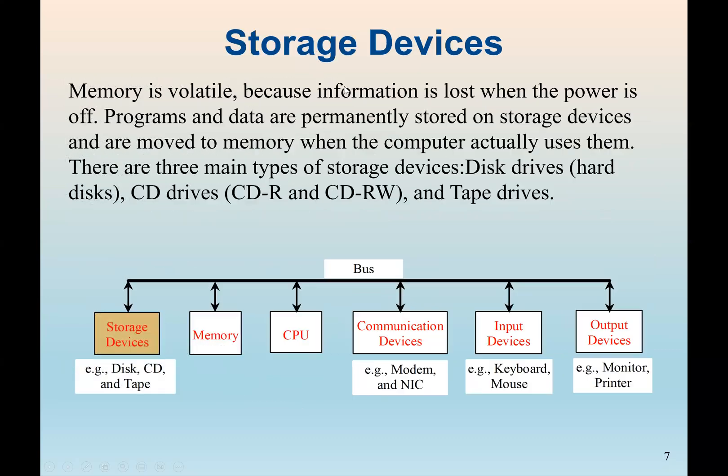So also we have the storage device, which is the hard drive. CD drive is another example, floppy disk, tape drives. A storage device normally will store data permanently. We know memory is volatile, which means when the computer is on, our data is okay. It's stored in the memory. But anytime the computer goes off, all the data in the memory will be lost.